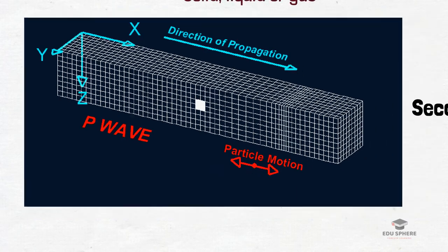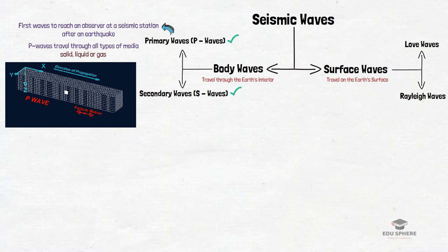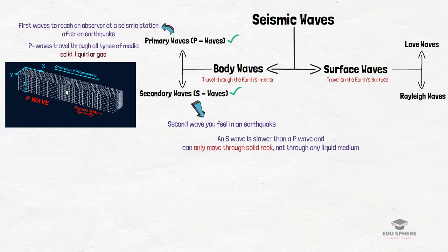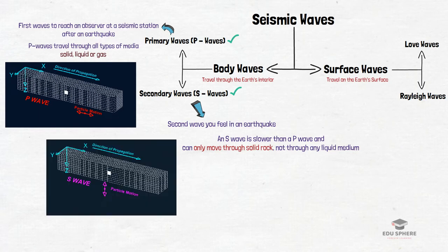The second type is the S wave or secondary wave which is the second wave you feel in an earthquake. The secondary waves are slower than the primary waves and can only move through solid rocks, not through any liquid medium. It is this property of S waves that led seismologists to conclude that the Earth's outer core is a liquid. The S waves move rock particles up and down or side to side perpendicular to the direction that the wave is traveling in.